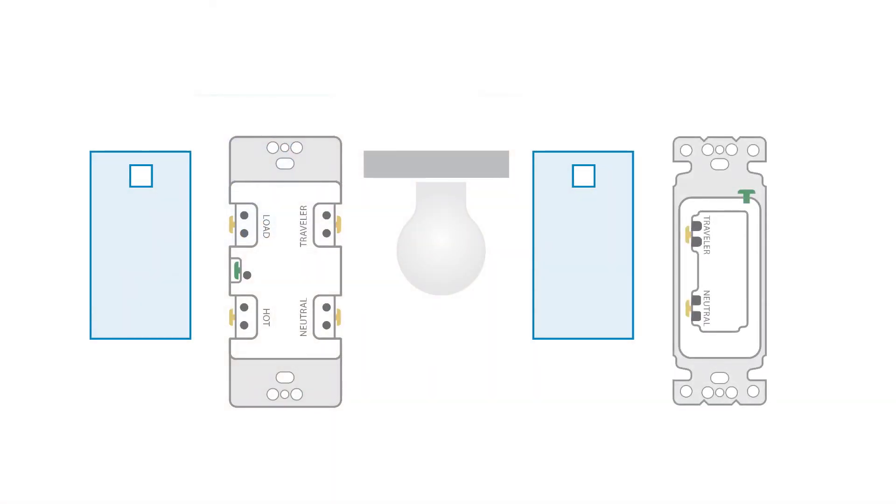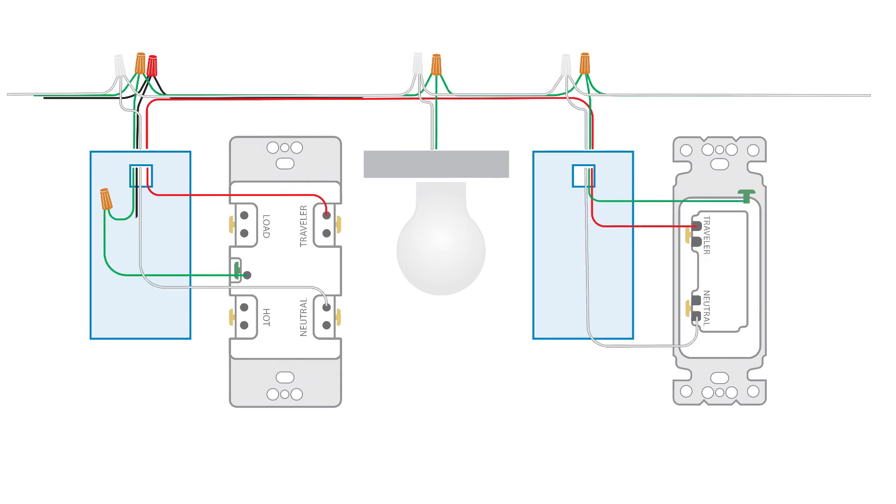You'll now need to add a single pole switch on the far end of the circuit. Follow the wiring identification as shown in this diagram. You are only connecting the traveler, neutral, and ground wires to the single pole switch.